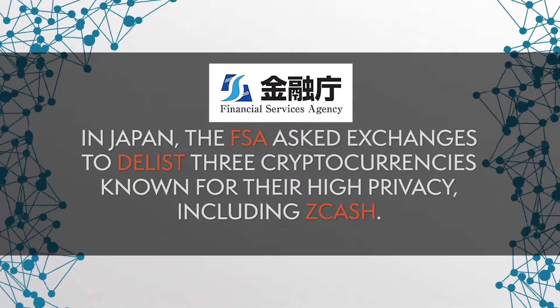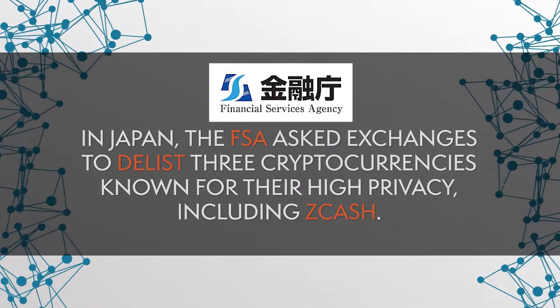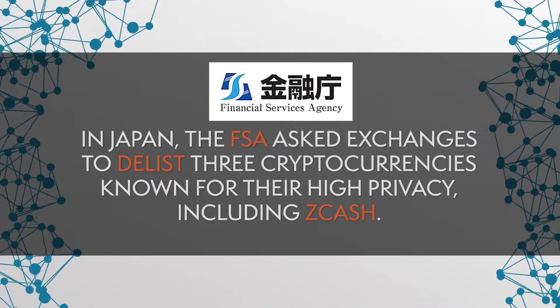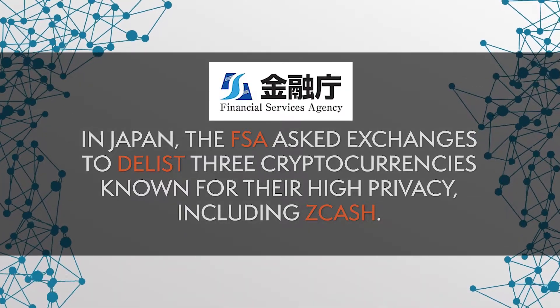Regulators are aware of this danger and are therefore skeptical towards fully anonymous cryptocurrencies. In Japan, the FSA asked exchanges to delist three cryptocurrencies known for their high privacy, including Zcash. Even though the advocates of Zcash claim many legal use cases for anonymous payments, there is still much skepticism about the anonymous use of Zcash.